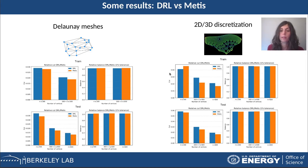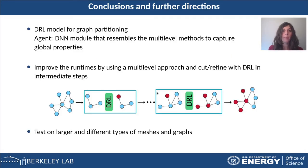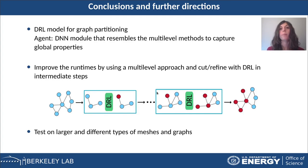To sum up, we have introduced a deep reinforcement learning model for the graph partitioning problem, in which the agent includes a deep neural network module that is able to capture global properties of the graph. There is still room for improvement. The model is currently slow, and we would like to improve the run times.